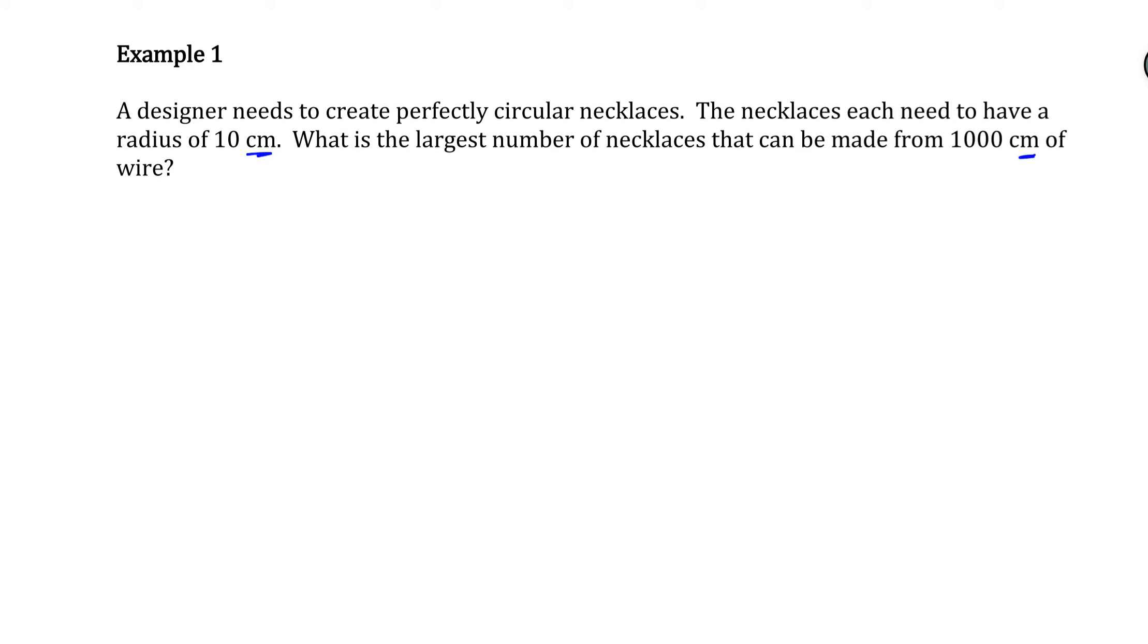So one necklace has a circumference of 2πr. So one necklace has a circumference of 2π times 10 or a circumference of 20π. Now, the one thing I'm not going to do is I'm not going to plug that into my calculator because I don't want to round and then round again. That would be double rounding. We keep talking about that in these lessons. So I'm just going to leave this in what we're going to call in terms of π. So that tells us that one necklace is 20π centimeters in length.